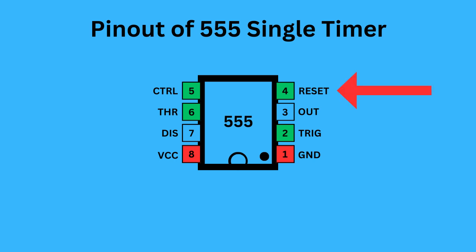Pin four is reset. It is used to reset the 555 timer's internal flip-flop. Pin five is control. It allows you to control the threshold voltage levels that the internal comparators use to set and reset the flip-flop.